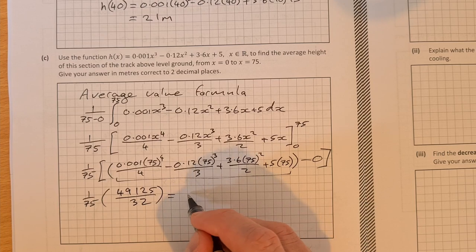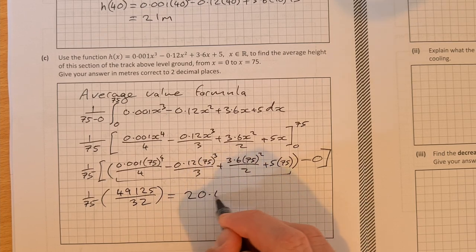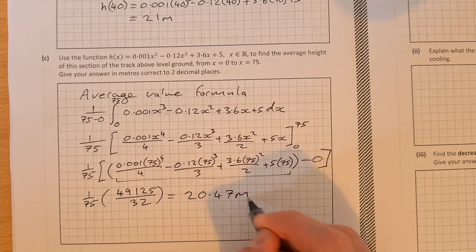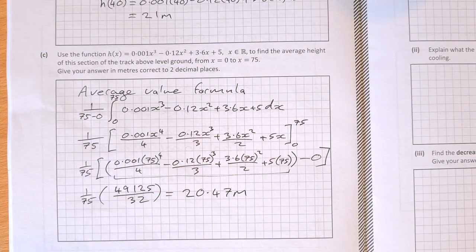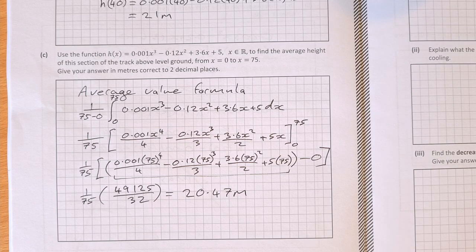Hopefully you should get 49,125 over 32. Multiply it by 1 over 75, you get 20.47 meters, correct to two decimal places. So the average height of the roller coaster between 0 and 75 is 20.47 meters.